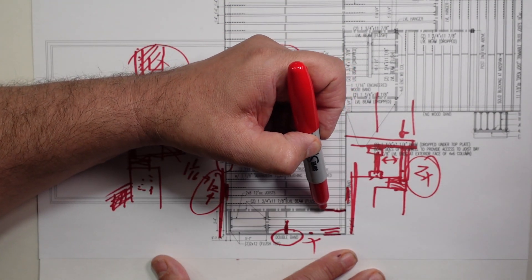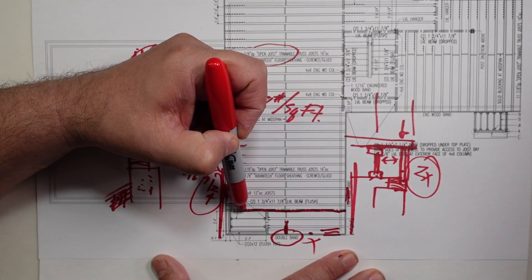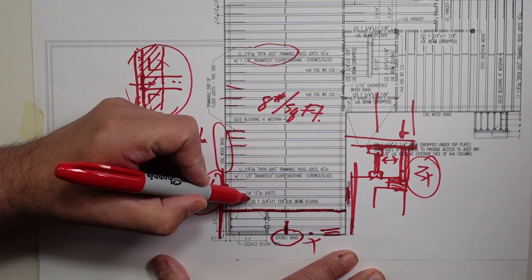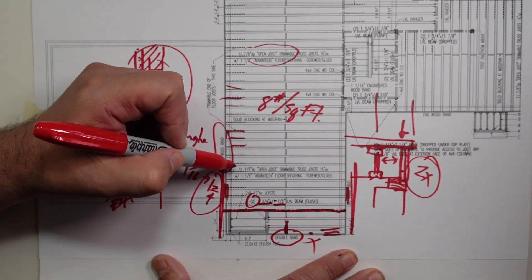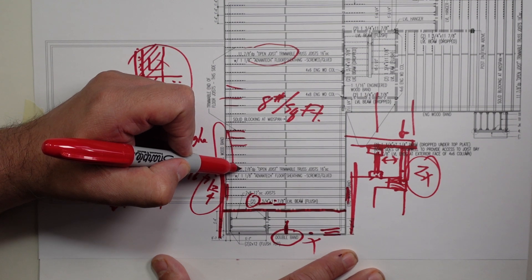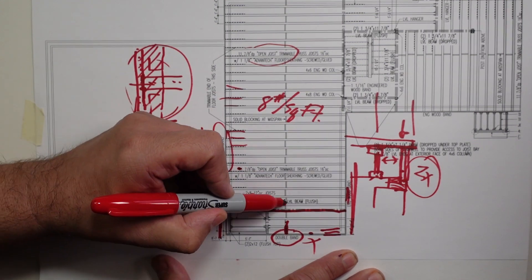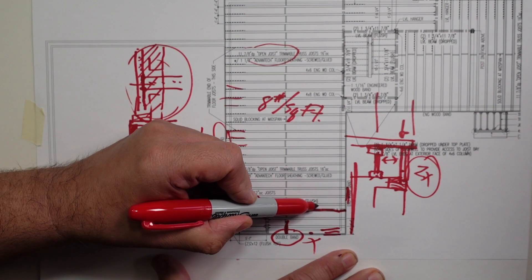is we have a double beam that goes all the way across here, and it's called out two inch and three quarters by eleven and seven eighths. Eleven and seven eighths is compatible with the floor joist system, so it fits in there. It's an LVL beam, and it is flush.